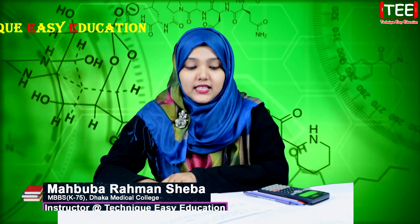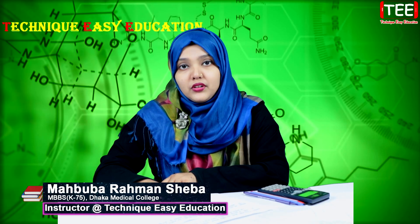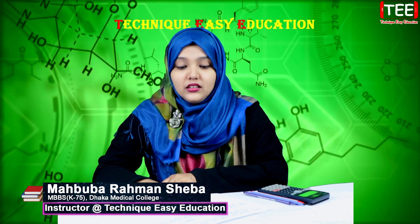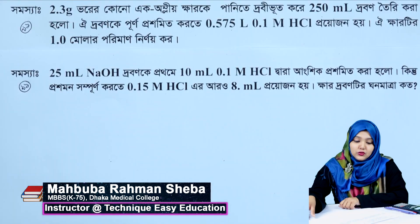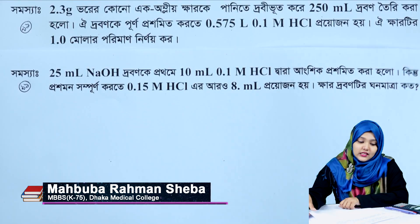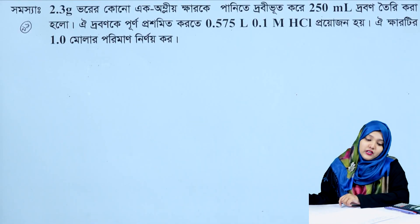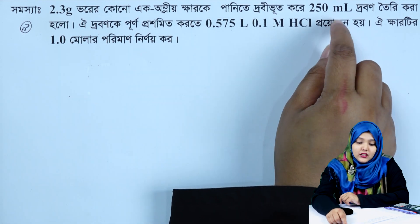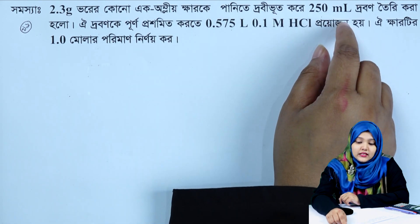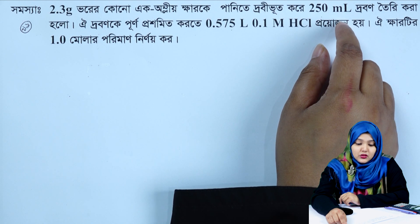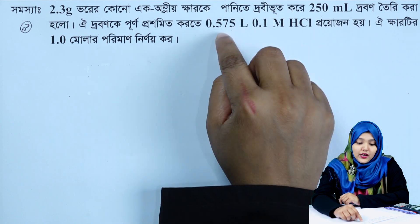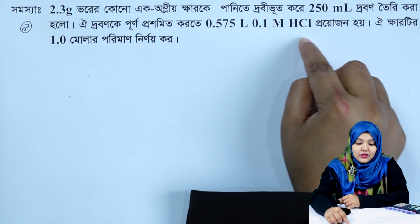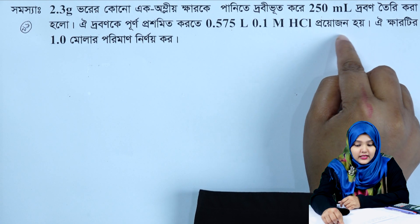Assalamualaikum. We have to say that 2.3 g of water is 250 ml of water. We have to say that 0.575 ml of water is 1 molar of acid.